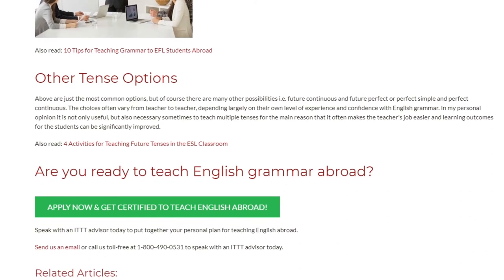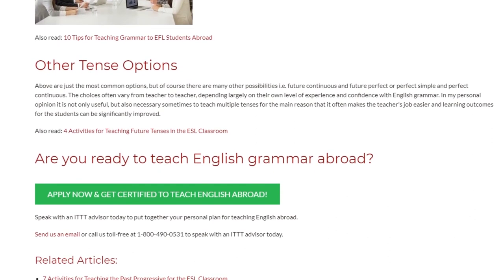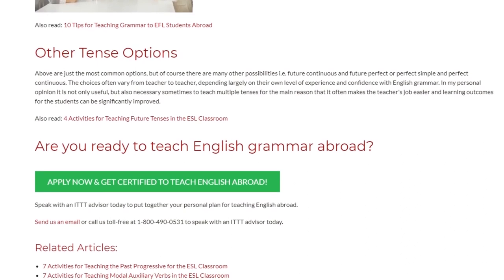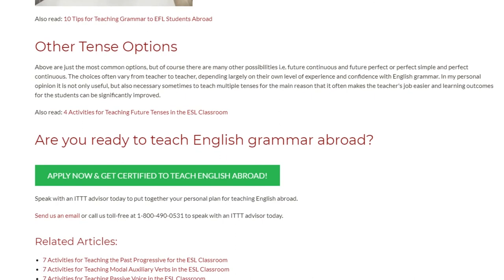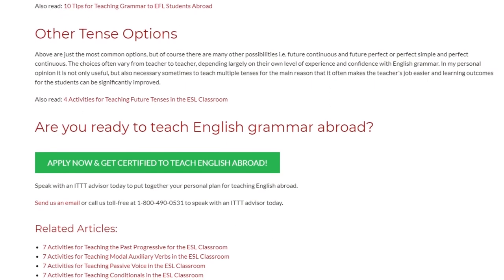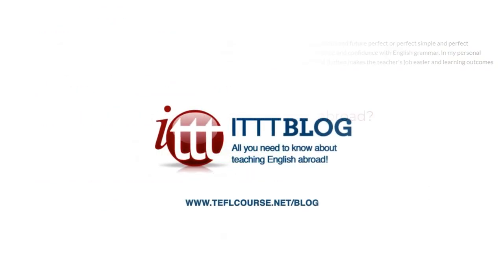Speak with an ITTT advisor today to put together your personal plan for teaching English abroad. Send us an email or call us toll free at 1-800-490-0531 to speak with an ITTT advisor today. Have a great day.